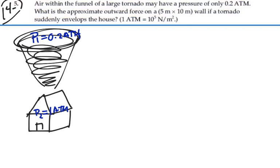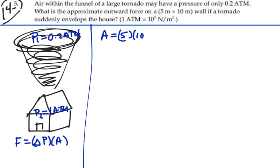So there's going to be a pressure difference between the inside of the tornado and the outside of the tornado. And the force that will be pushing on the wall will be equal to that pressure difference times the area of the wall. In this case, the area of the wall is given as 5 meters by 10 meters, or 50 square meters.